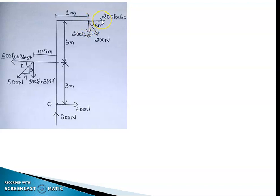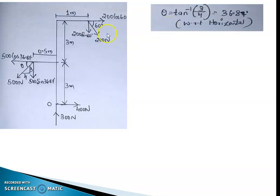This gives a rightward force and a downward force, since the 200 newton force acts away from the point of consideration. Before that, I need to find the angle theta for the 500 newton force. It makes a slope of 3 by 4 — three vertical, four horizontal — so theta equals tan inverse of vertical over horizontal, which is tan inverse of 3/4.